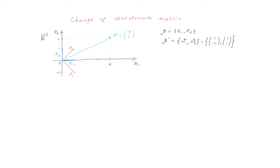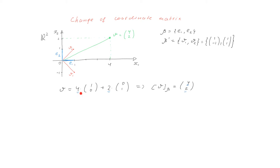An important role of a basis is that given a basis, for each element of the space we can write a coordinate vector. For example, for this vector v which is in green, we can write that this is four times the first basis vector in beta plus two times the second basis vector in beta. Therefore we can write that the coordinates of this vector in beta are 4, 2, where the numbers 4 and 2 correspond to these coefficients.